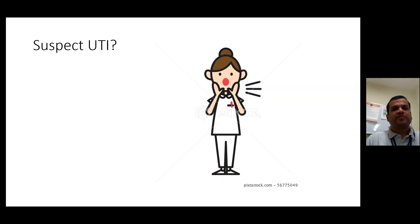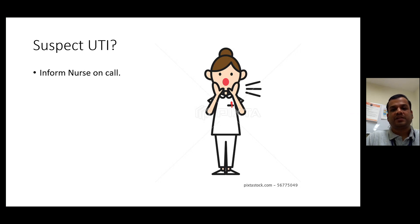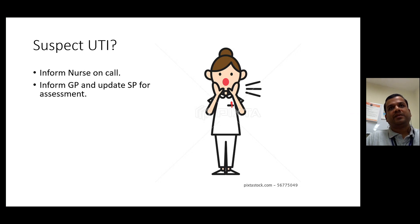So what would you do if you suspect a UTI? First thing — inform the nurse on call. Ask them to see the patient and take the observations. If they're within limits, make a phone call to the nurses — there's a chance we might be able to do something, and it's good for the team to be aware. If possible, inform the GP, give the presentation and the readings — blood pressure and everything — and update the SP for an assessment.